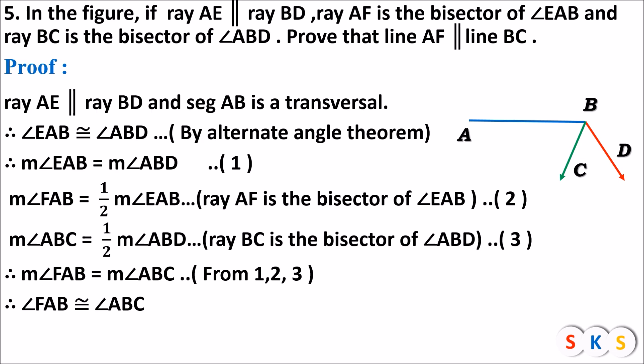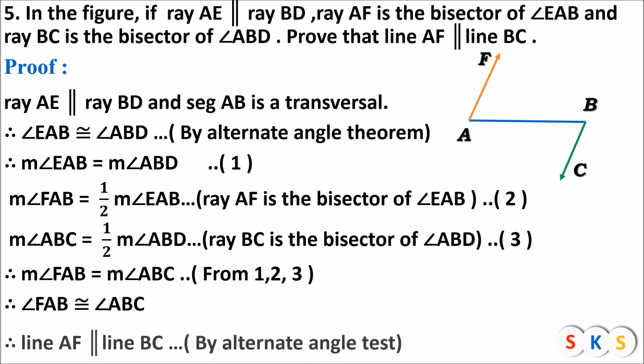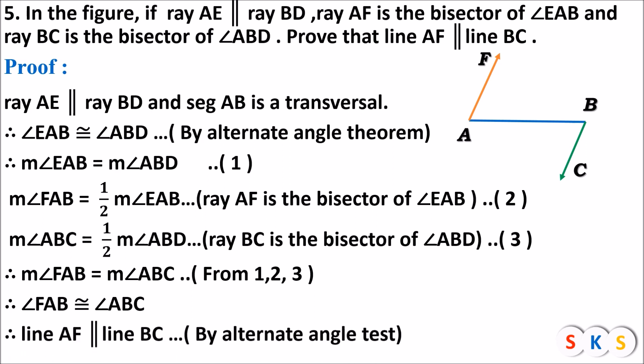Angle FAB and angle ABC are alternate angles. We know that if the alternate angles formed by two lines are congruent, then those two lines are parallel. Therefore, line AF is parallel to line BC by the alternate angle test.